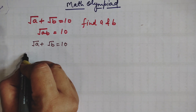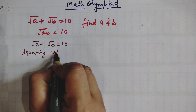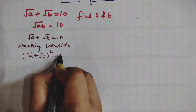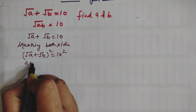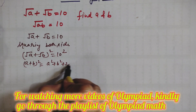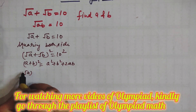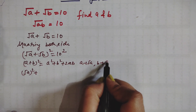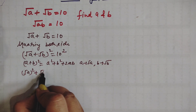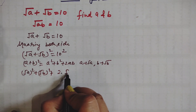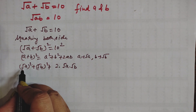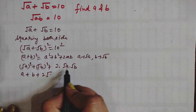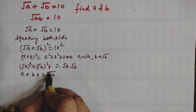First step is squaring both sides of root A plus root B equals 10. We are using the identity (A + B)² = A² + B² + 2AB. Here A is root of A and B is root of B. So root of A squared plus root of B squared plus 2·root(A)·root(B), which simplifies to A + B + 2√(AB).